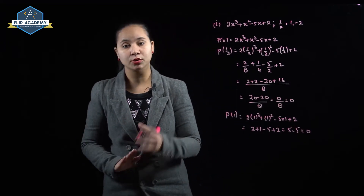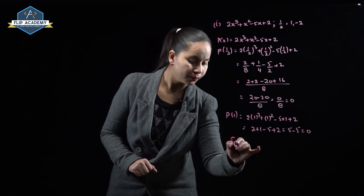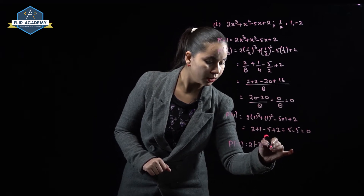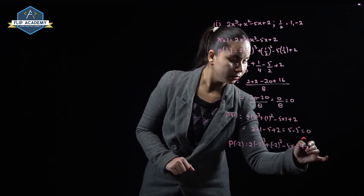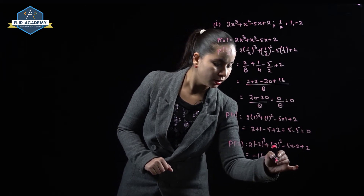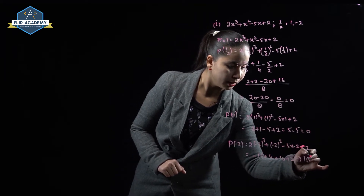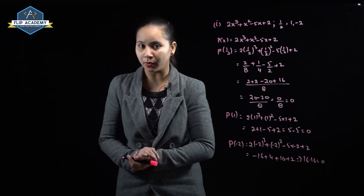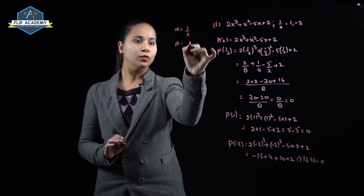p(1) = 0, so 1 is also a zero of this polynomial. Now p(-2) = 2×(-2)³ + (-2)² - 5×(-2) + 2 = -16 + 4 + 10 + 2 = 16 - 16 = 0. So x = -2 is also a zero of this polynomial.